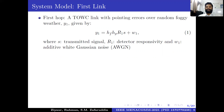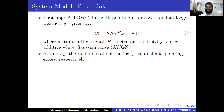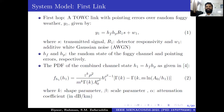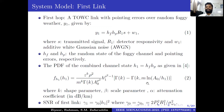We consider the first link as a terrestrial OWC link with pointing error over random fog. The received signal is given by Equation 1: Y₁ = Hf·Hb·R₁·S + W₁, where R₁ is the detector responsivity, S is the transmitted signal, and W₁ is the AWGN noise. Hf and Hb are the random states of the foggy channel and pointing error, respectively. The PDF of this combined channel, which includes foggy conditions with pointing error, is given by Equation 2, and includes a gamma function with an incomplete gamma function with a logarithmic argument.